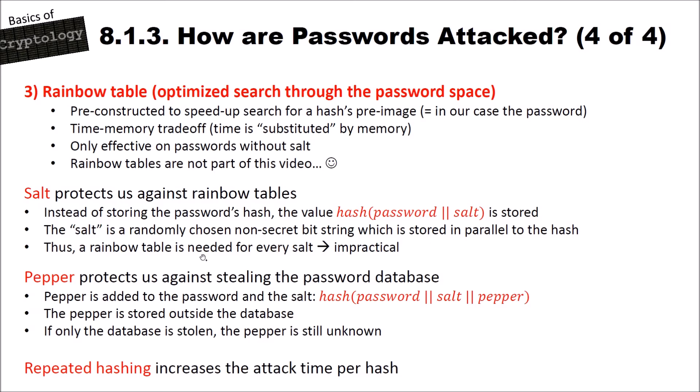Finally, repeated hashing increases the attack time per hash. Instead of storing a single hash, we hash the password, then hash the hash, repeatedly, until the operation takes about half a second. For a legitimate user logging in, half a second is acceptable. But for an attacker who must test every candidate hash, testing one million passwords would require half a million seconds — making attacks extremely hard or even impossible.